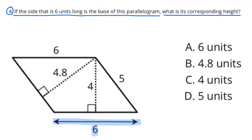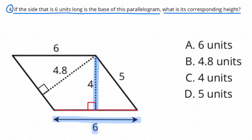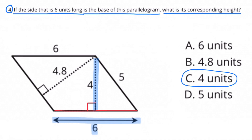Number 4: If the side that is 6 units long is the base of this parallelogram, what is its corresponding height? I've highlighted its base in blue, and the corresponding height is going to be at a 90 degree angle in comparison to its base. Since this makes a 90 degree angle corresponding to the base, I would select C: 4 units.